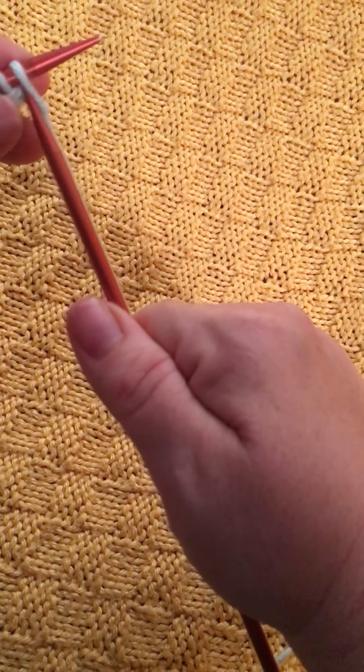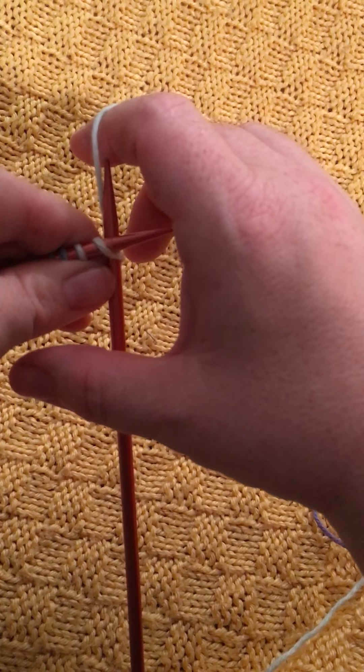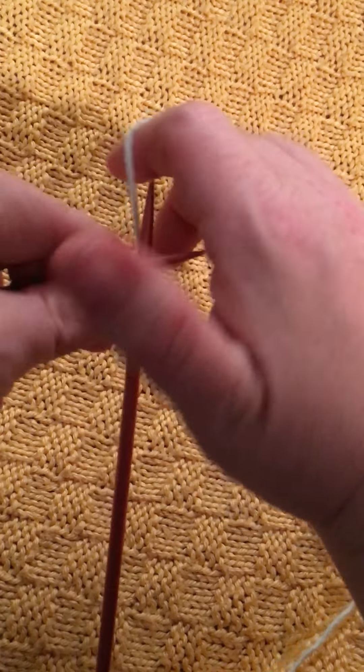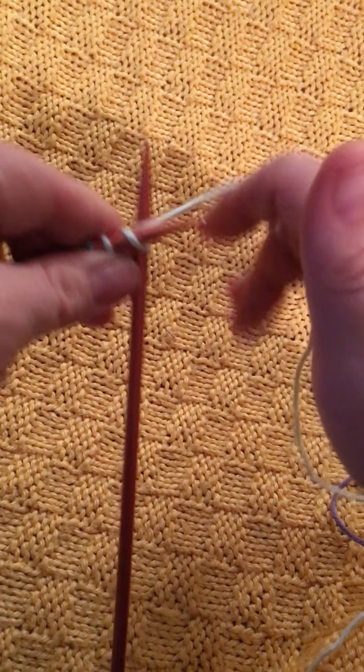Because what you're gonna do is stick your needle in, you're gonna make this piece of yarn go up and then between the two needles, so it's not making like a fancy loop, it's just going up and between.